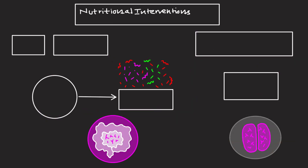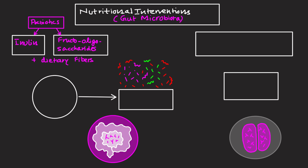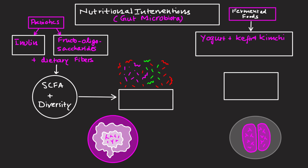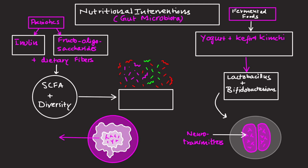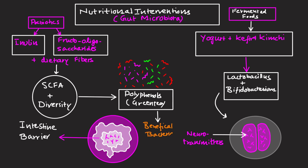Nutritional interventions targeting microbiota. Prebiotics such as inulin, fructooligosaccharides, and dietary fibers enhance short-chain fatty acid production and support microbial diversity. Fermented foods like yogurt, kefir, and kimchi contain live probiotic cultures like Lactobacillus and Bifidobacterium that modulate neurotransmitter levels and strengthen intestinal barrier function. Polyphenols — for example, from berries or green tea — promote beneficial bacteria and reduce oxidative stress.